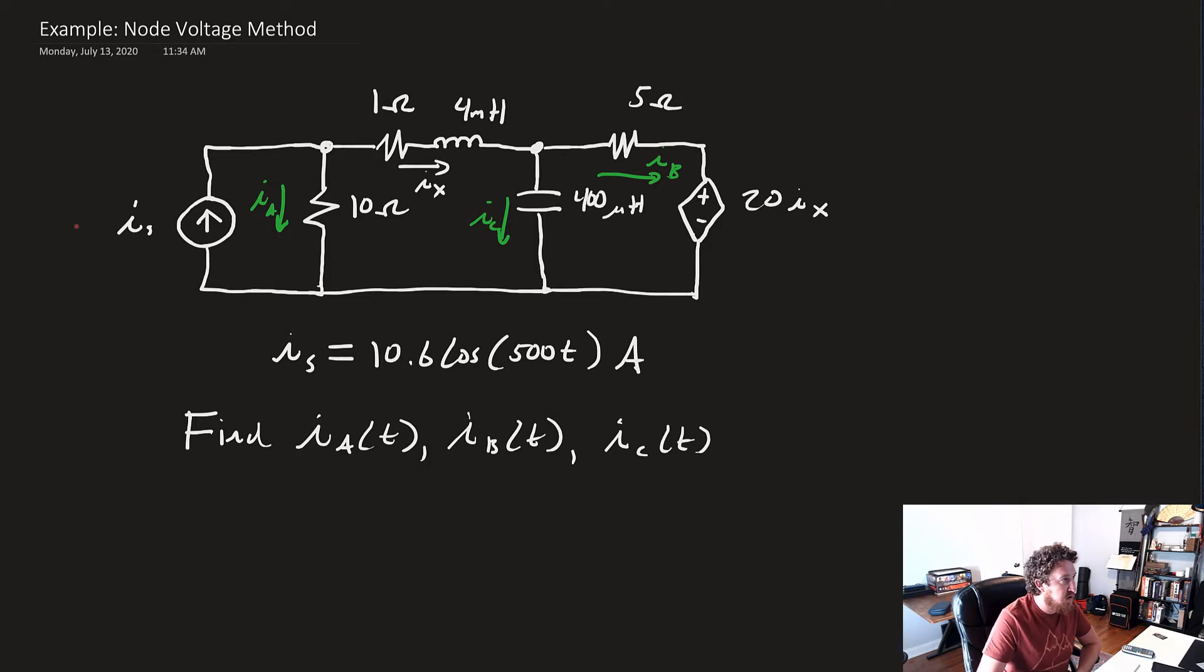Just to quickly go over the circuit, we've got a current source given here, 10.6 cosine of 500T, so our omega is 500. Then we've got a 10 ohm resistor, 1 ohm in series with a 4 millihenry inductor, and down here a 400 microfarad capacitor.